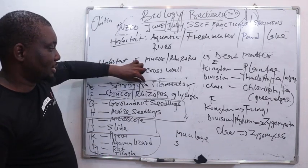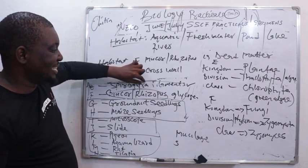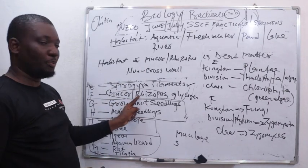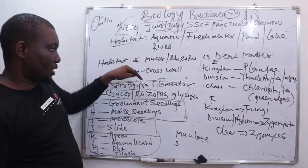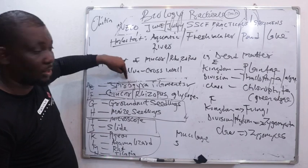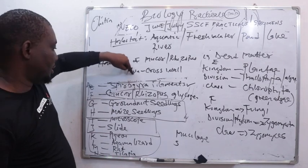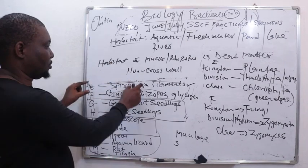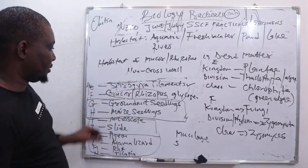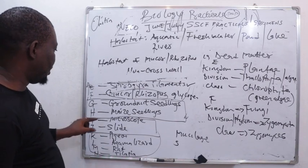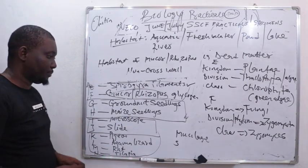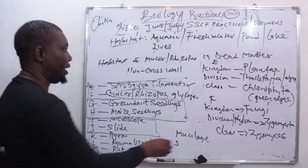This one is a producer, this one is a decomposer. Please take note of these two — very, very important. Now we go to the next specimens, G and H.